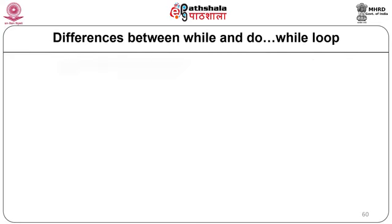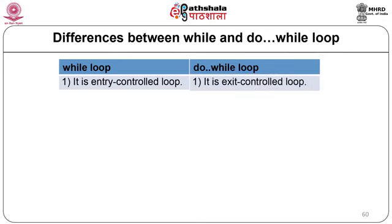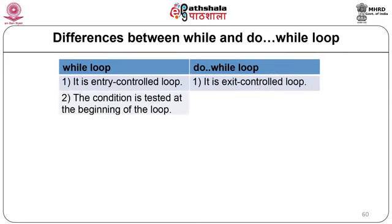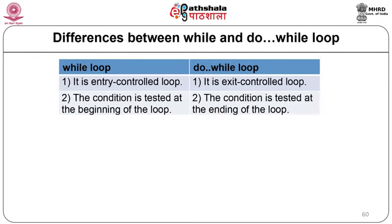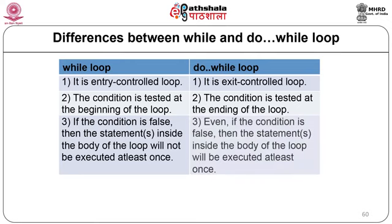Differences between while and do-while: while is an entry control loop; do-while is an exit control loop. In while, the condition is tested at the beginning; in do-while, at the end. If the condition is false initially in a while loop, the body executes 0 times. In do-while, even if the condition is false initially, the body executes at least once.